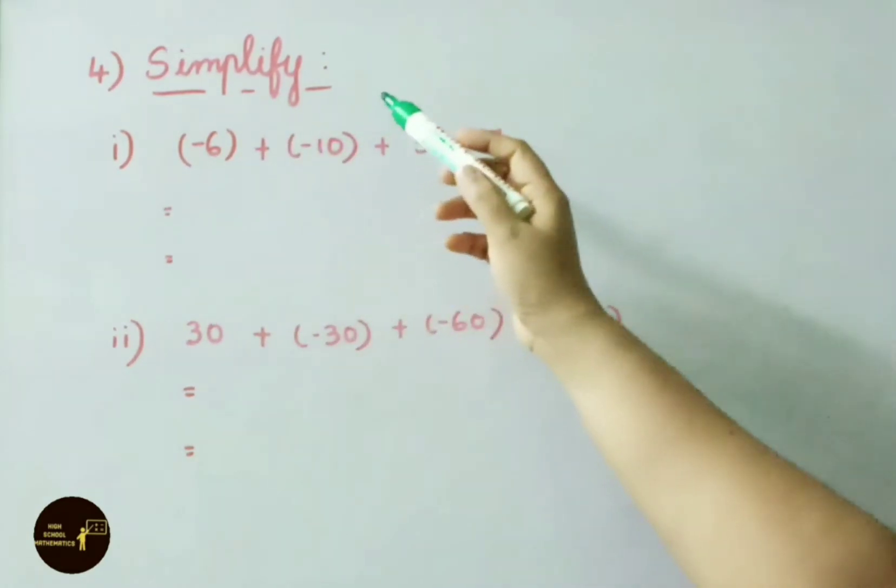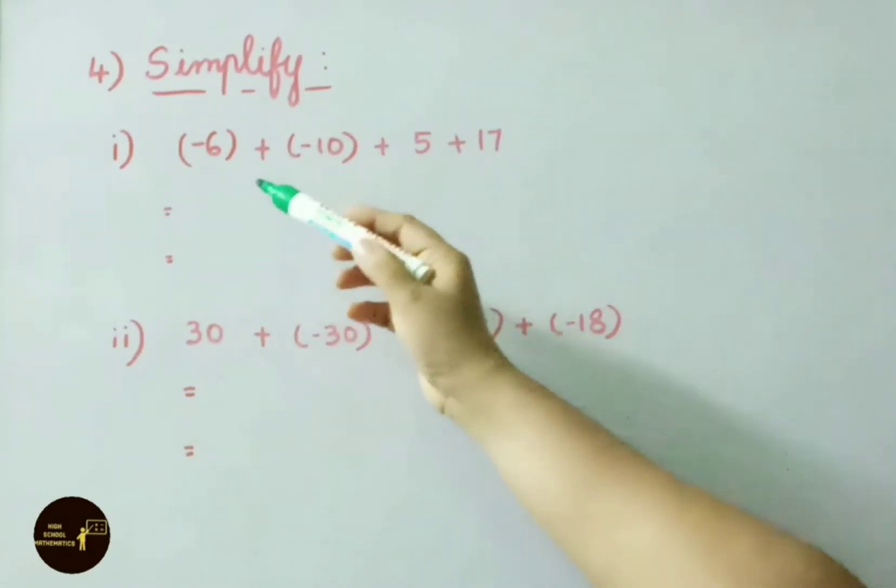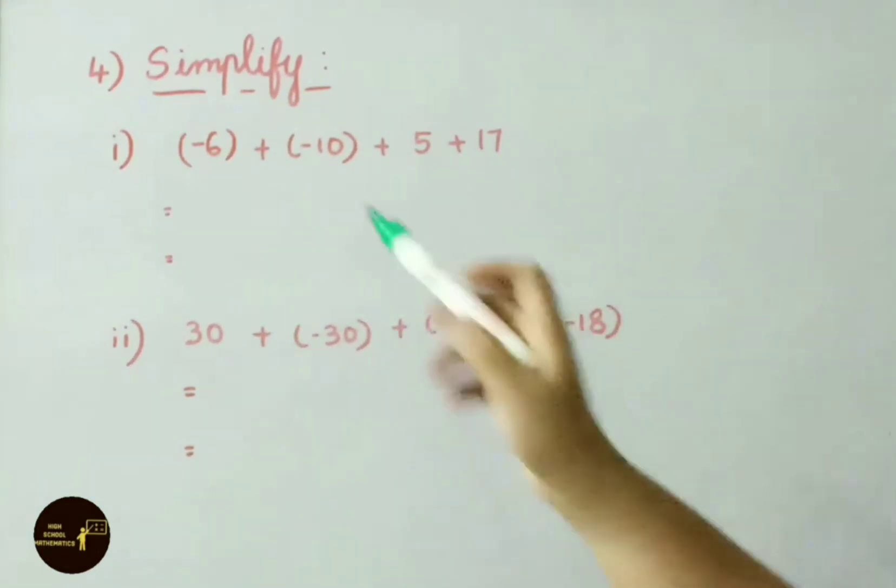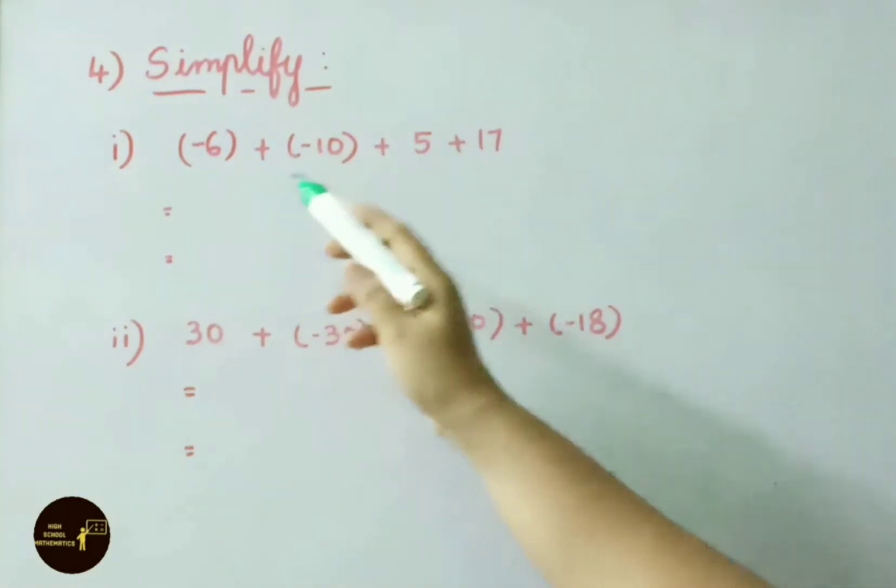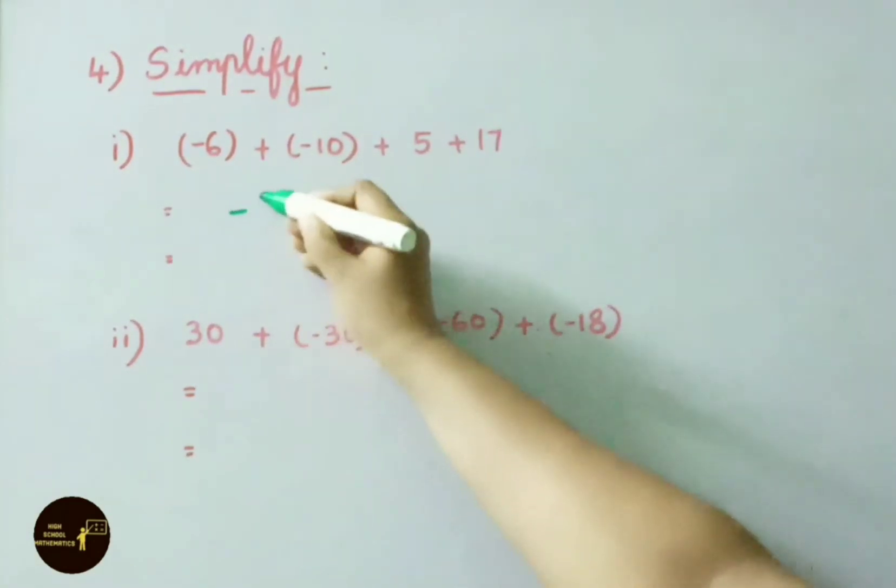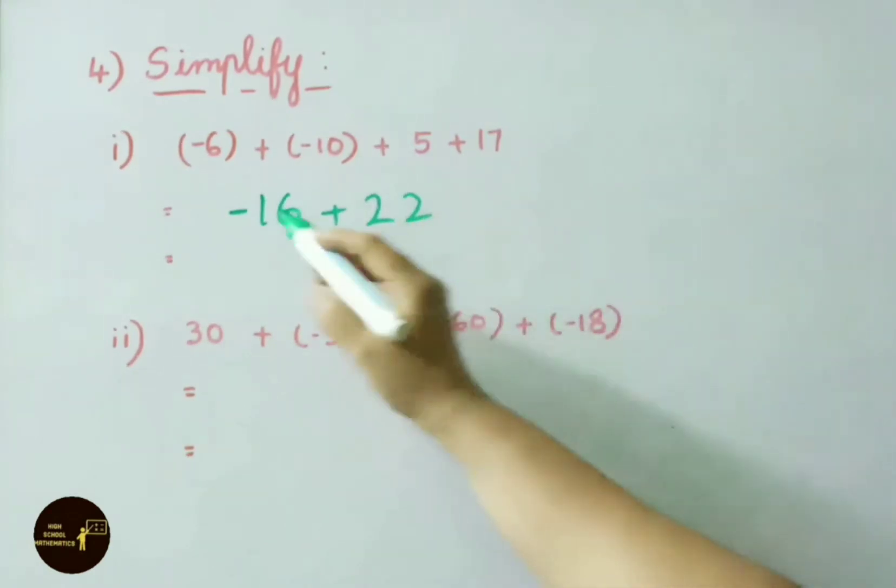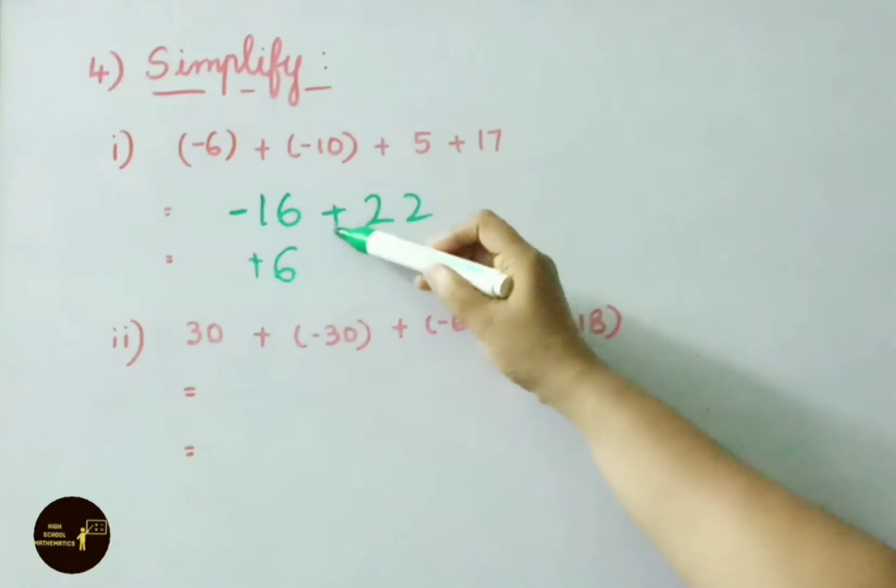See fourth question now. Simplify. First one. Minus 6 plus minus 10 plus 5 plus 17. Minus 6 minus 10, same sign is there. We have to do addition. So minus 6 minus 10 means minus 16. Plus 5 plus 17 is 22. Here both are opposite sign. We have to do subtraction. 22 minus 16 is 6. Here among these two, 22 is the greatest integer. So its sign plus. We kept here plus. So the answer is plus 6.